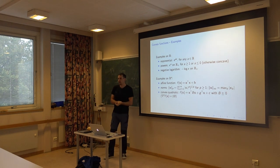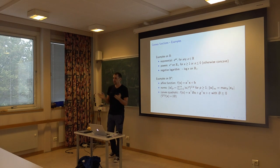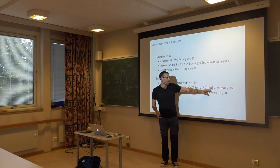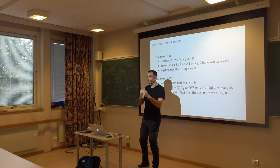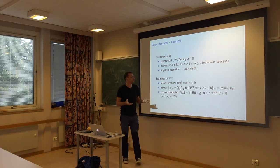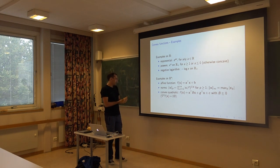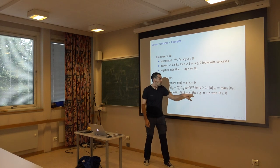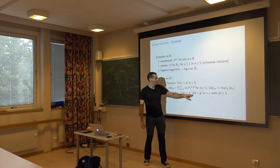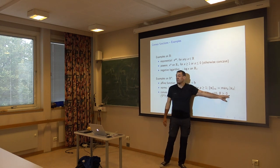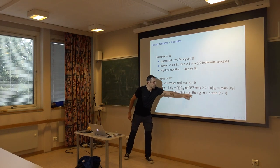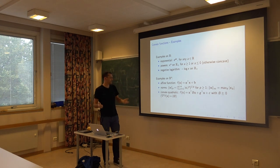A few more examples of convex functions. Affine functions — everything linear or affine — is convex. Any kind of norm is convex, including infinity norms where you take the max over all absolute values of elements. For quadratic forms, the matrix used in the quadratic term must be positive definite — otherwise it's not convex. The Hessian of x^T B x is essentially 2B, so if B is positive definite, the function is convex.